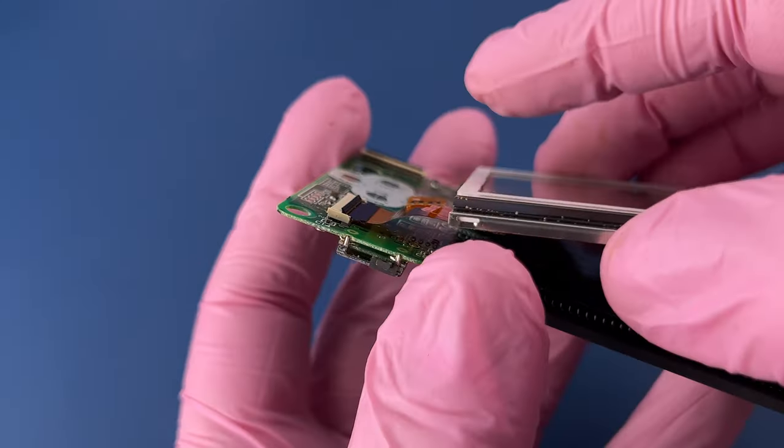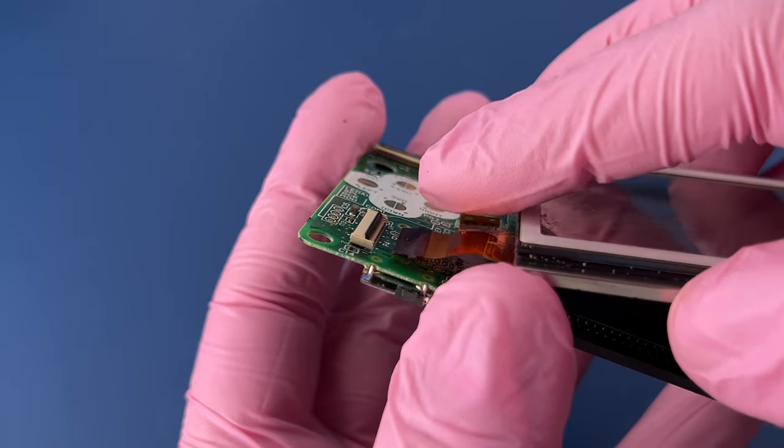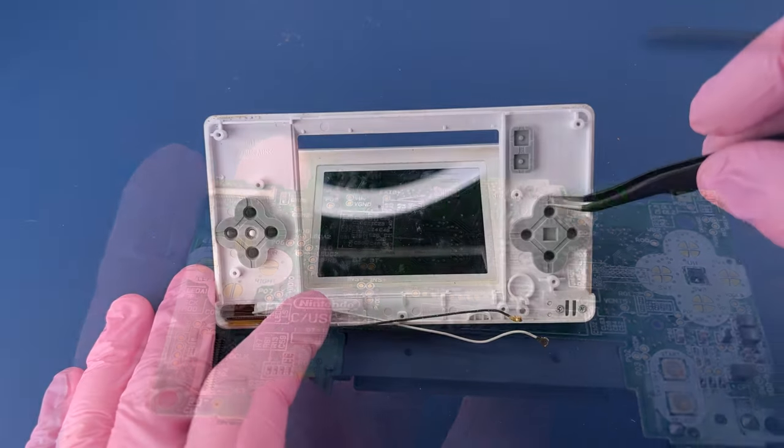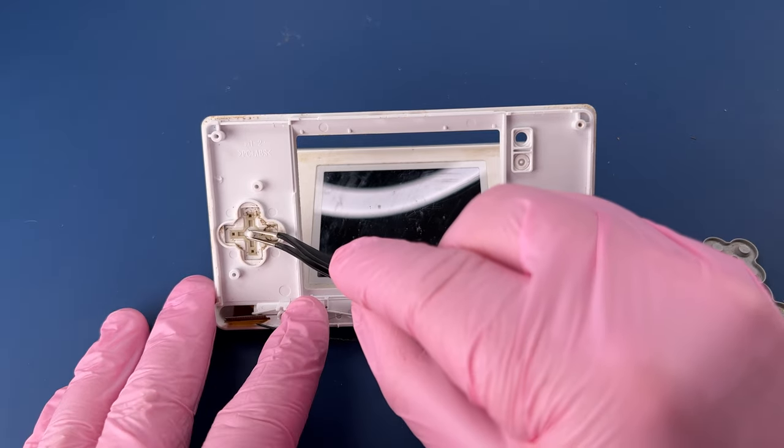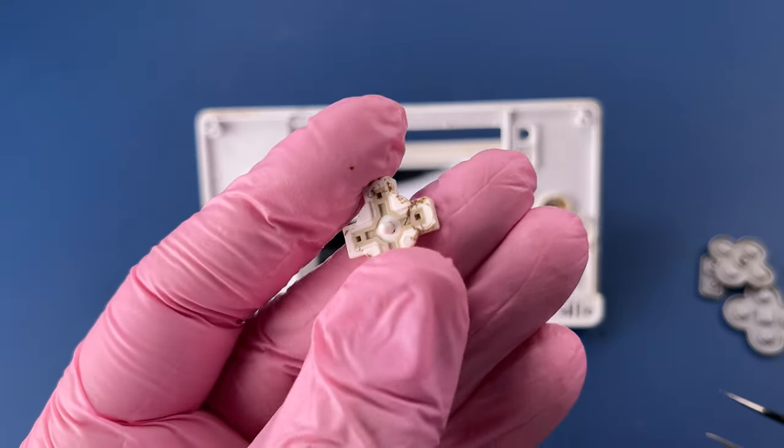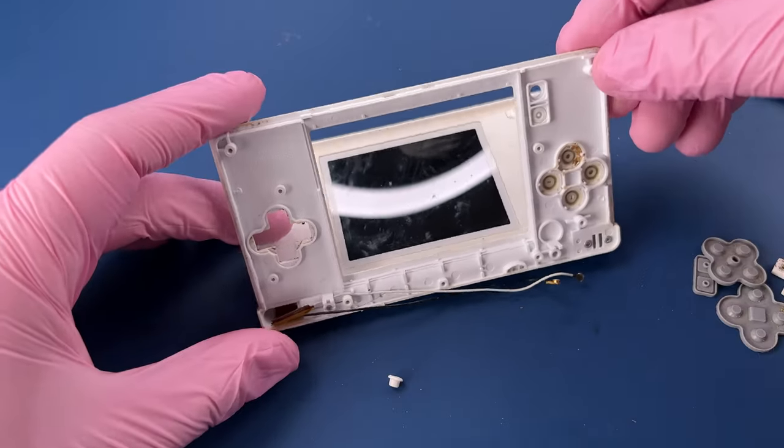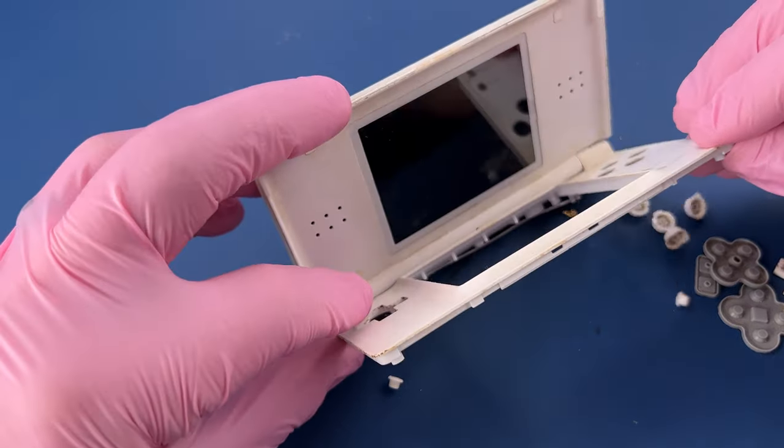I'm gonna go ahead and remove the touchscreen from the motherboard here. Another stuck gate with a stuck cable, but we got it. And that's basically what I was expecting it to look like underneath the buttons when something gets spilled on. That's one of the easiest places for it to kind of get into and then get gummy and sticky.